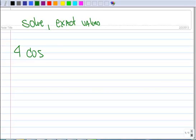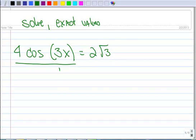And let's do an equation now. So this says solve. And again, we want to use some exact numbers. So now we've got 4 times the cosine of 3x equals 2 times the square root of 3. First thing we want to do is divide by 4.